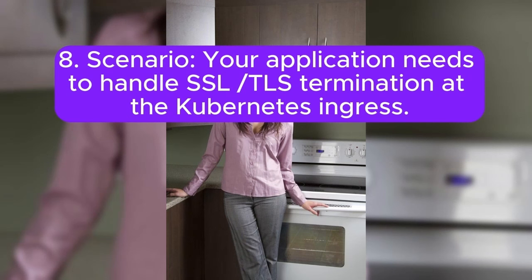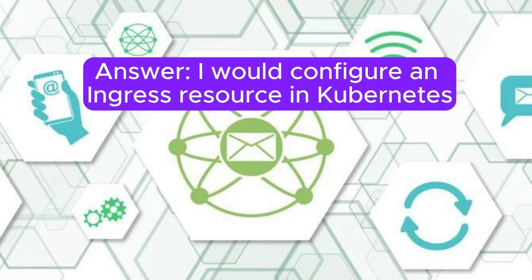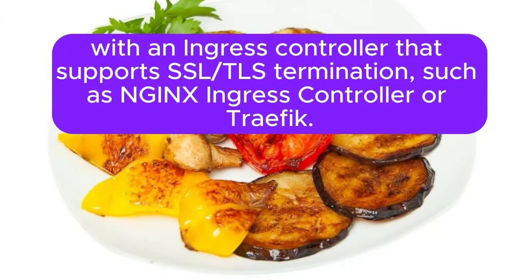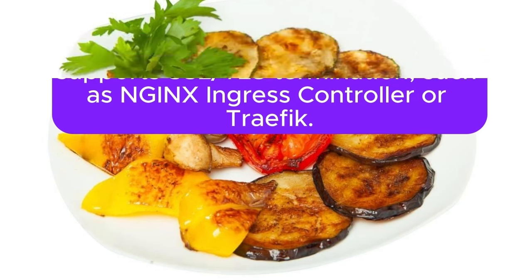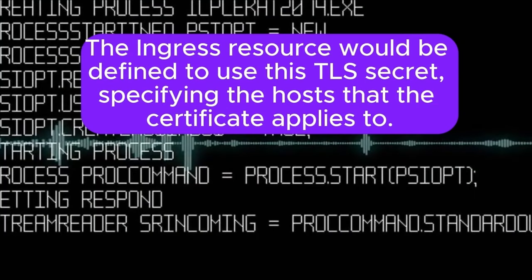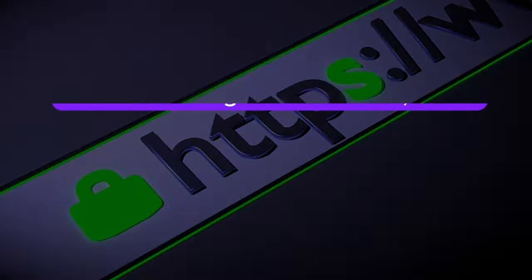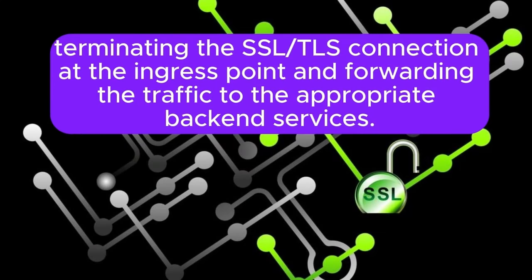Scenario 8: Your application needs to handle SSL/TLS termination at the Kubernetes ingress. How would you configure this? Answer: I would configure an ingress resource in Kubernetes with an ingress controller that supports SSL/TLS termination, such as the Nginx ingress controller or Traefik. I would create a TLS secret in the Kubernetes namespace containing the SSL certificate and private key. The ingress resource would be defined to use this TLS secret, specifying the hosts the certificate applies to. The ingress controller would handle incoming HTTPS traffic, terminating the SSL/TLS connection and forwarding traffic to the appropriate backend services.